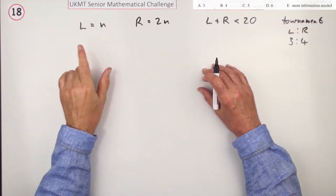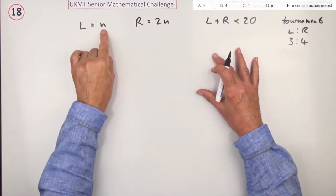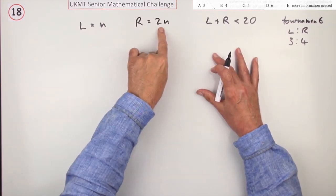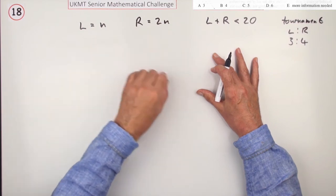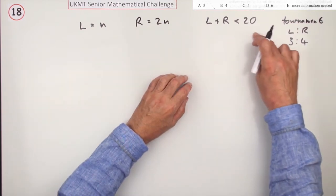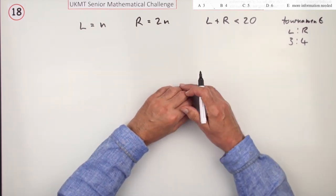Now this question isn't as complicated as it might look. It says you've got 2N left-handed players and 2N right-handed players, that's twice as many right-handed. However, the total number of players it says is less than 20.